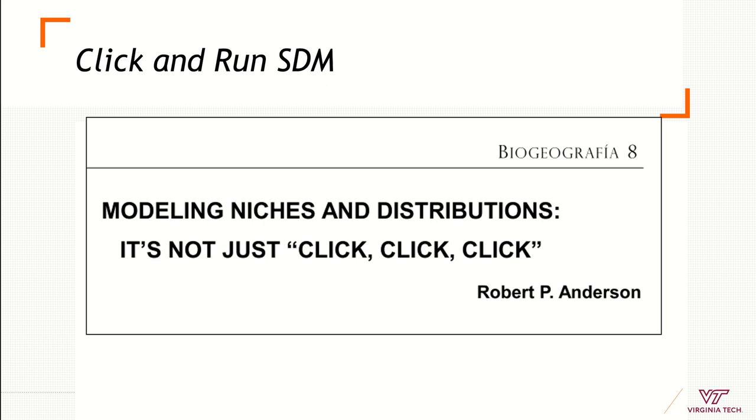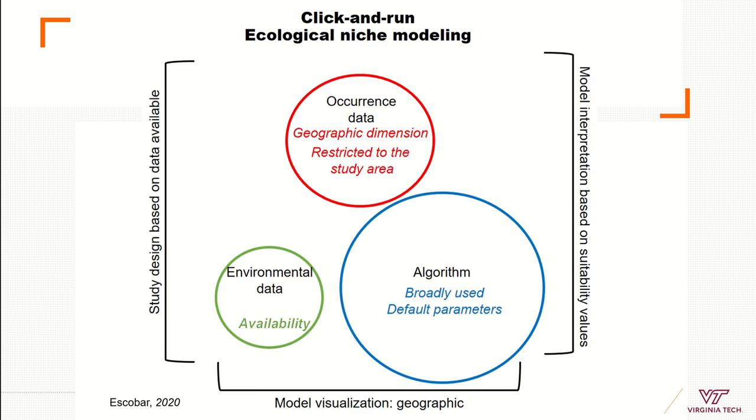The traditional framework in niche modeling, in order of relevance, I think is working on the occurrence data—just having points in a map from different sources, maybe doing fieldwork. Then having the environmental data, generally using climatic data, and then using an algorithm, hopefully an algorithm that is broadly used so we don't need to justify why that algorithm, and using default parameters. That was the traditional way to do ecological niche models.